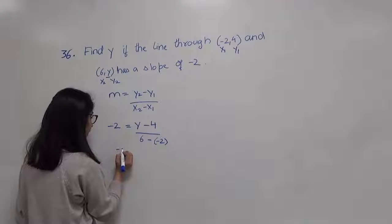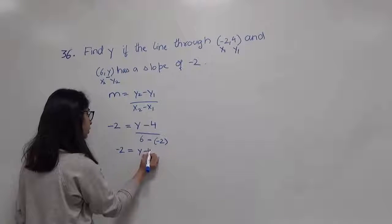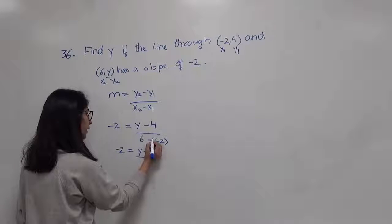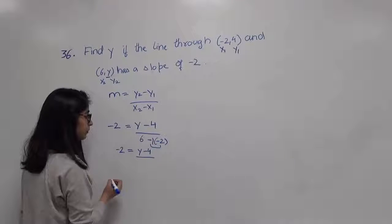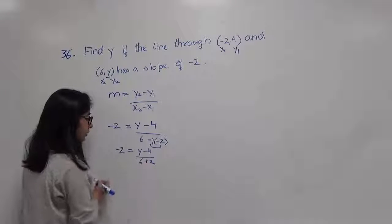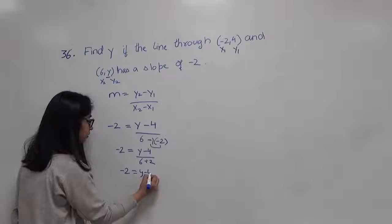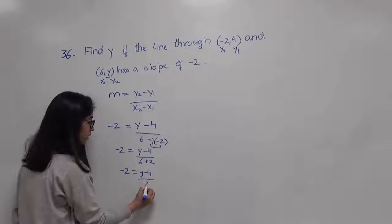Now just simplify this. Negative 2 equals to y minus 4. And negative 1 multiplied by negative 2 gives me positive 2. So 6 plus 2. This gives me negative 2 equals to y minus 4 over 8.